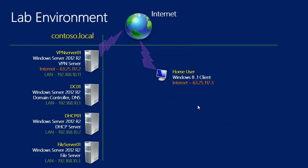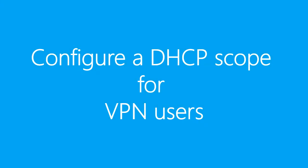Now this is the lab environment we have and this is what we are going to build. We have a home user who is connected to the internet — it's a Windows 8.1 client. In our corporate network, which is the contoso.local domain, we have a VPN server running Windows Server 2012 R2 with two network interfaces: one connected to the internet and the second connected to the local corporate network. We also have a domain controller and DNS server, a DHCP server to lease out IP addresses to VPN clients, and a file server for VPN clients to access hosted resources. Before we start deploying the VPN service, we need to create a new DHCP IP scope for our VPN clients.